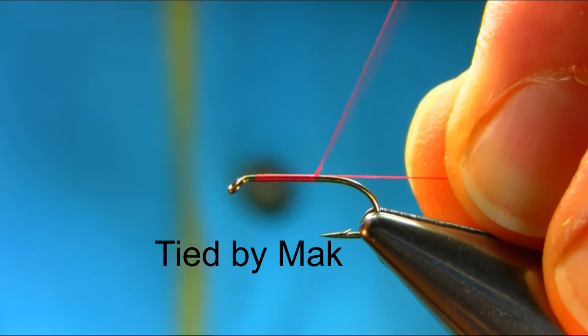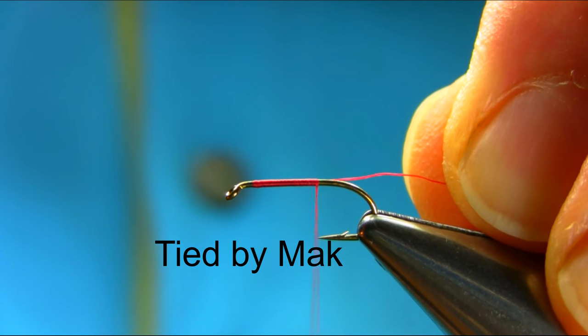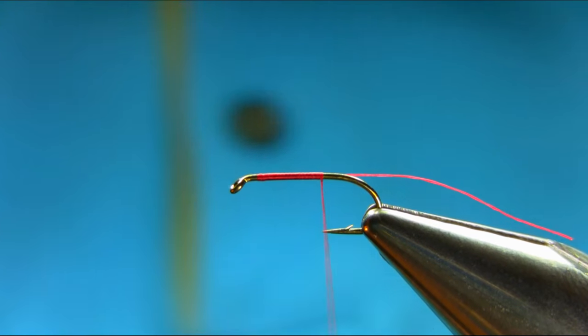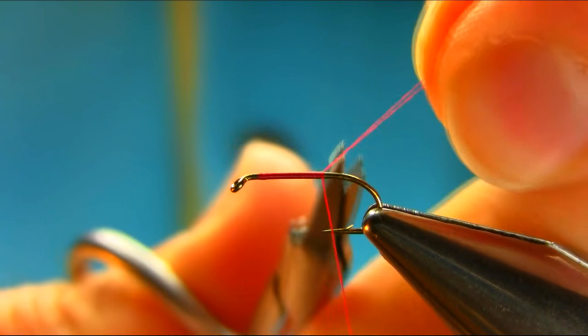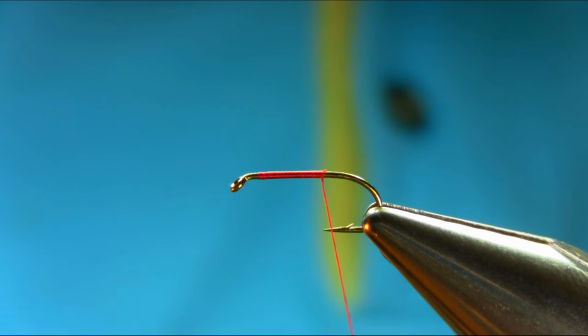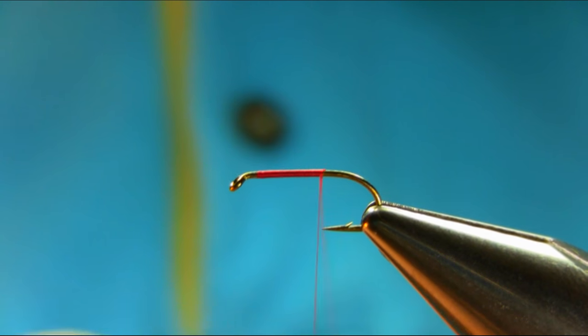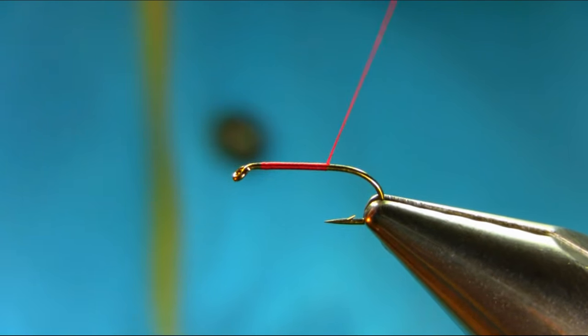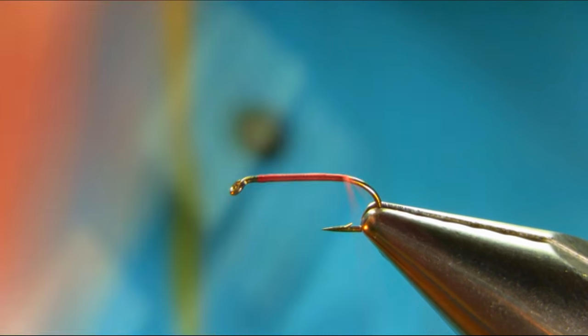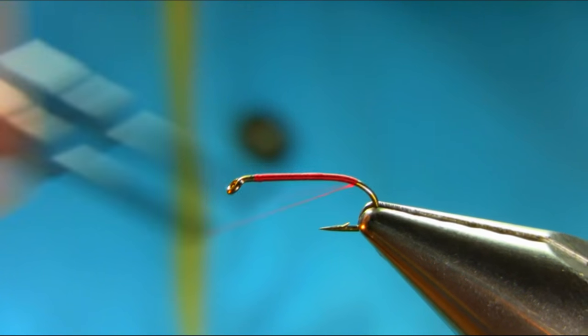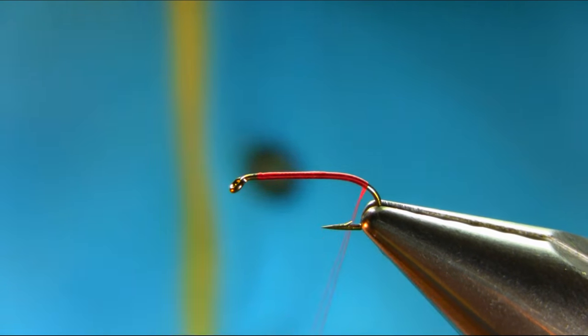Start below the eye with a touching turn. Take the waste piece off. Open the thread all the way, just around the bend.